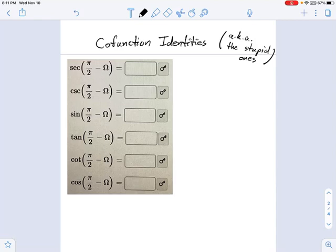So one of the things that our curriculum expects three honors students to memorize is the co-function identities, which I think is stupid because we don't need to memorize these.